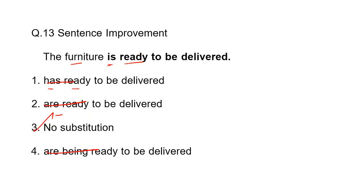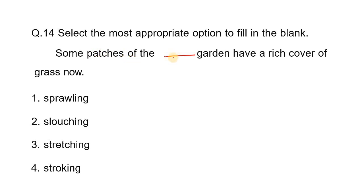Some patches of the desk garden have a rich cover of grass. Now what is the garden? Sprawling means spreading over a large area — the very top meaning. Slouching and stretching have different meanings. Sprawling is the correct answer: a sprawling garden has a rich cover of grass.